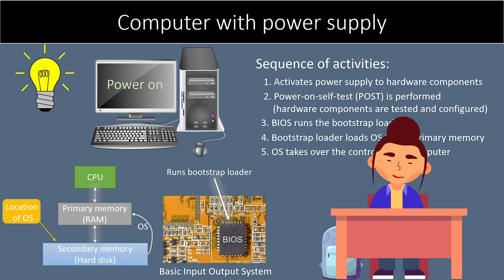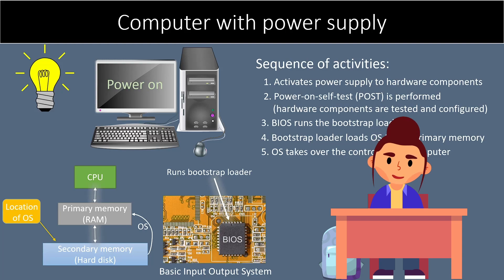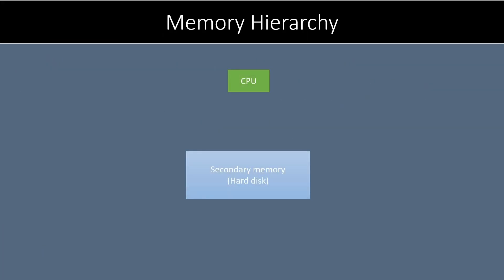Why are data and instructions not fetched directly from the hard disk to the CPU? Things would have been simplified then. The CPU operates at very high speed — it is super fast — and the hard disk is quite slow. So if the CPU fetches data and instructions directly from the hard disk, there would be a speed mismatch and the CPU may have to wait for a long time to get data from the slow hard disk.